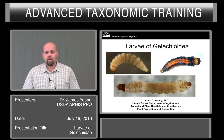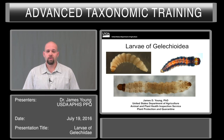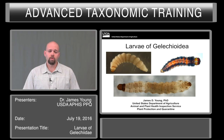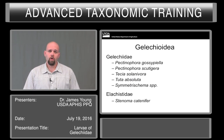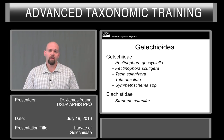With larvae, it's even harder. There are only about 200 species that have been officially described as larvae. So with such a small percentage of larvae known, it will be hard to identify many specimens past family. When we look at the Gelechioidea, there are five taxa that are of great importance.